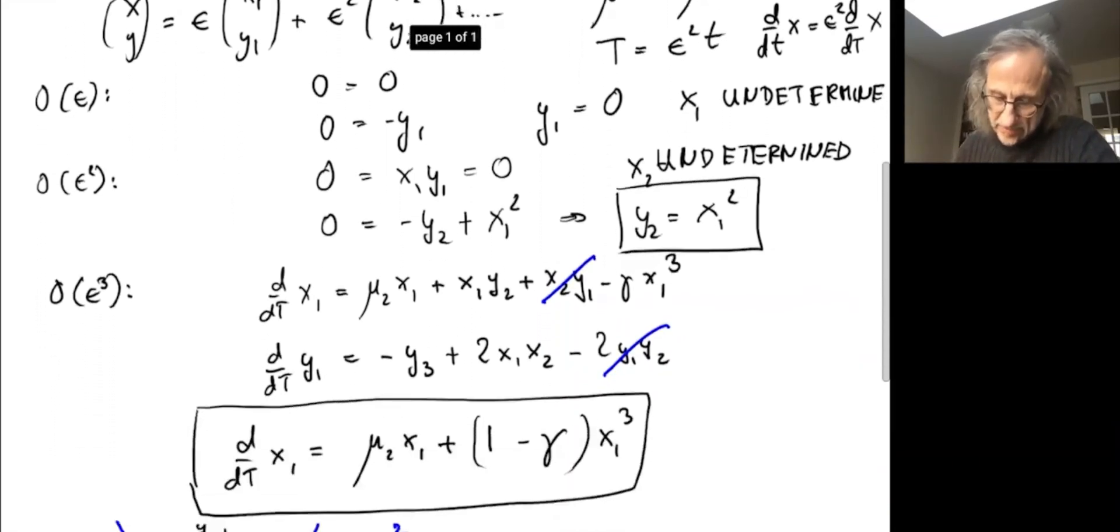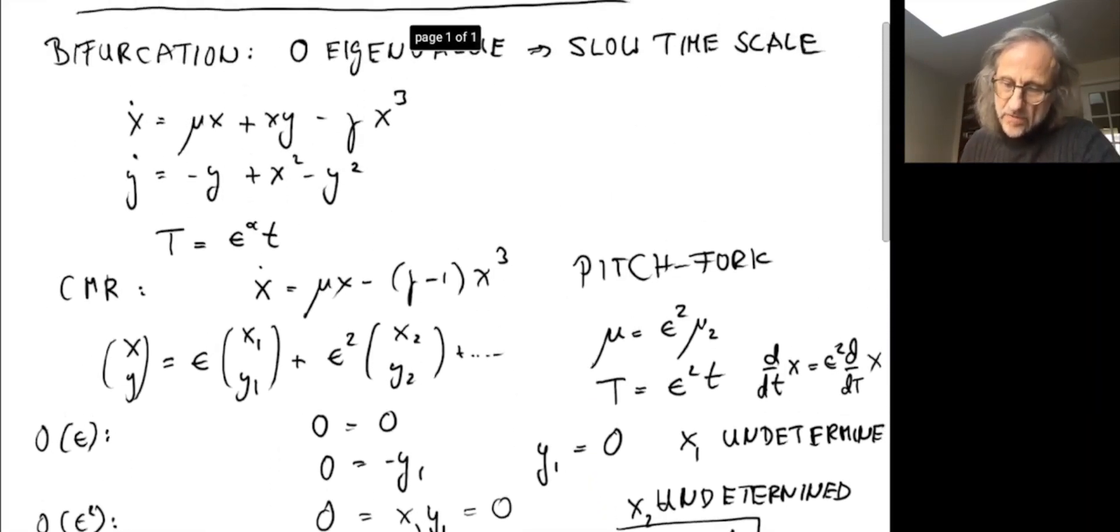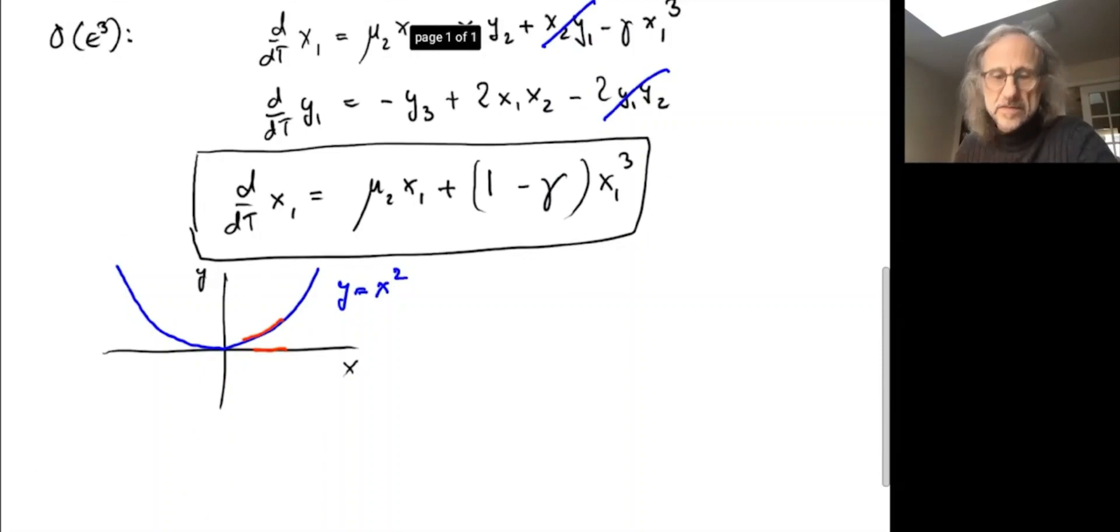The only thing we could be unsatisfied with is that to get the scaling here, we actually invoked the result from the center manifold reduction. If we have to do that to proceed, it's not very useful. Once we've done center manifold reduction, we have the equation already. So what's the point? We'll see later how we guess these scalings efficiently by looking at the symmetries of the problem. But for now, let's appreciate that we've used multiple scale analysis to derive this equation.